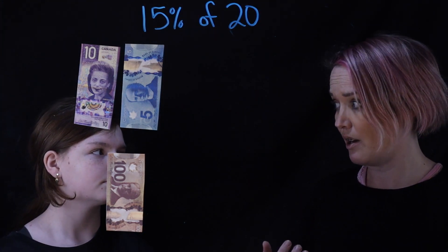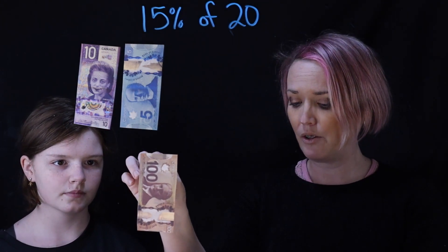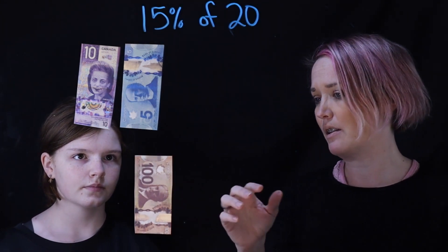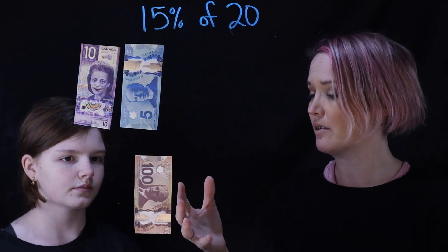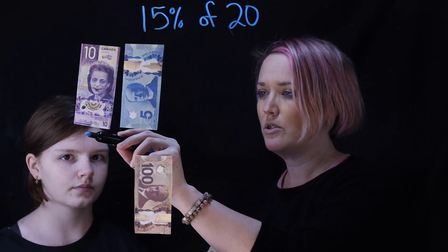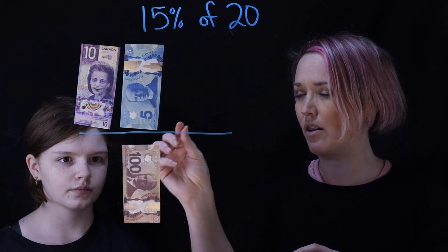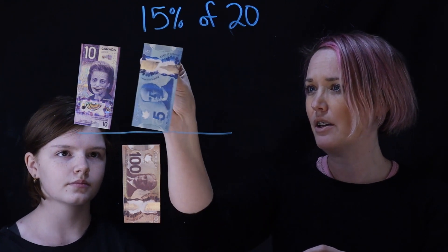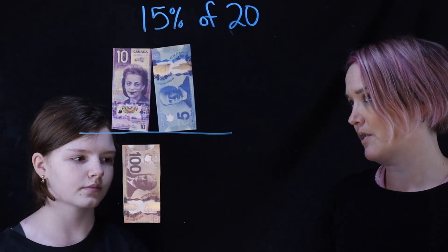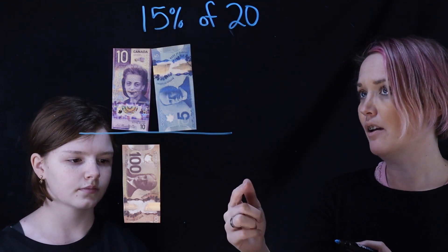So shall we start there? Here's a hundred. So if someone tells you that they're going to give you 15% of a hundred, let's just draw a little line here. So that means if they have a hundred dollars, they're going to give you 15 dollars. So that's 15% of a hundred.